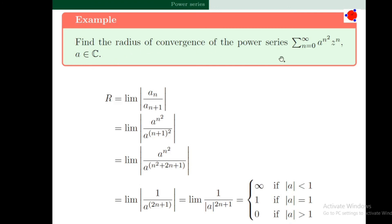Find the radius of convergence of sigma n=0 to infinity a^(n²) · z^n, where a is a complex number. Using R = lim |a_n / a_{n+1}|, after simplification we obtain lim of 1 / |a|^(2n+1). This equals infinity if |a| < 1, equals 1 if |a| = 1, and equals 0 if |a| > 1.